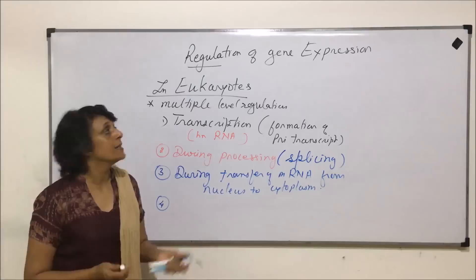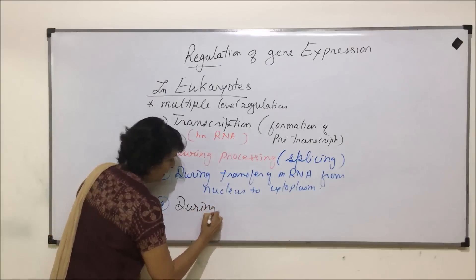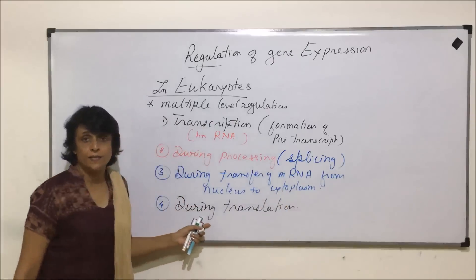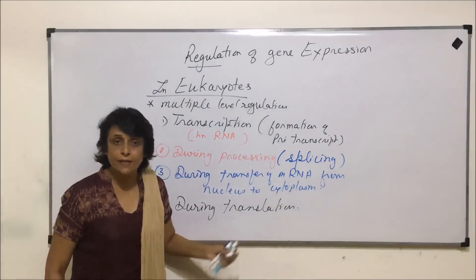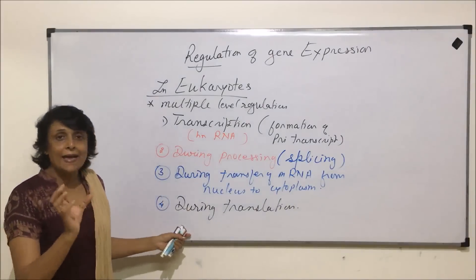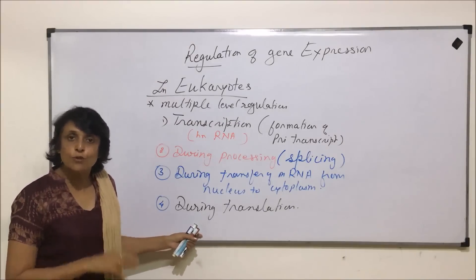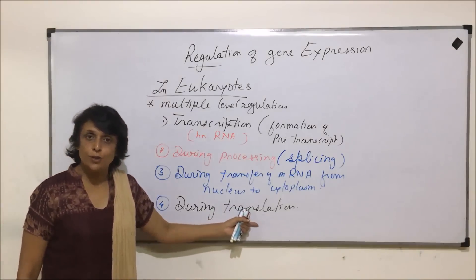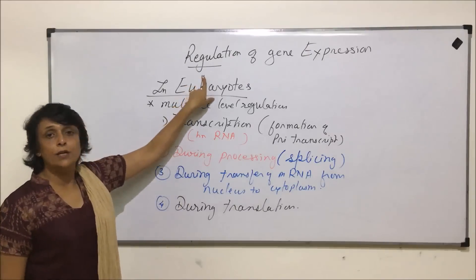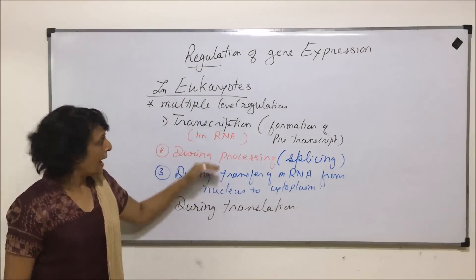The fourth level where regulation can be done is during translation — that is, when protein synthesis takes place, when mRNA comes in contact with the smaller ribosomal subunit and the two ribosomal subunits assemble to form a complete ribosomal complex. So there are four steps where regulation of gene expression in eukaryotes can take place.